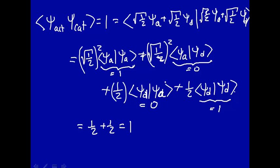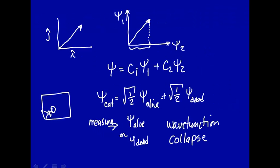So that's wave function collapse — a conceptual problem of quantum mechanics. If you read the Wikipedia article on interpretations of quantum mechanics, there are about 10 or 15 different ways of interpreting it. The commonly accepted way is the Copenhagen interpretation, which says when you make a measurement, you collapse the wave function to one of the eigenfunctions with a corresponding eigenvalue.